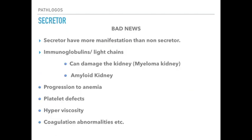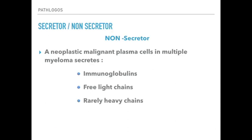The bad news about secretors is that they have more manifestations than non-secretors. The immunoglobulins or light chains being secreted can cause damage to the kidneys and lead to myeloma kidney, or lead to secretion of light chains causing amyloid kidney. When the kidneys are damaged it can affect erythropoietin release and lead to anemia. These light chains can bind to platelets leading to platelet abnormalities, or bind to each other in blood and tissues making the blood hyperviscous, leading to hyperviscosity. They can also bind to coagulation factors and lead to coagulation abnormalities.